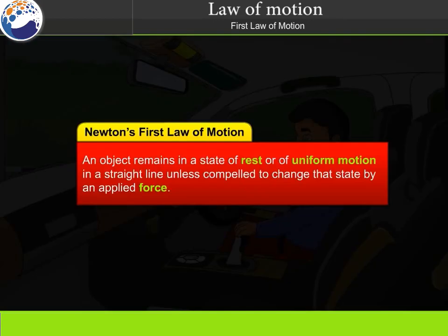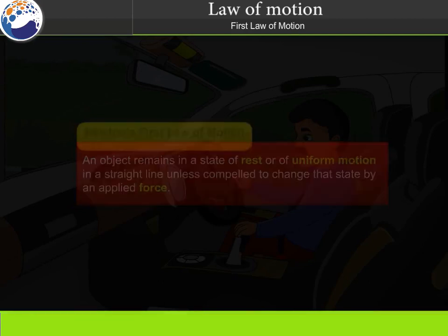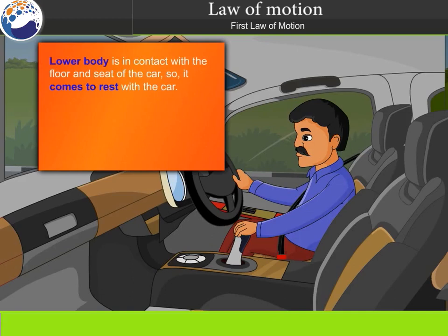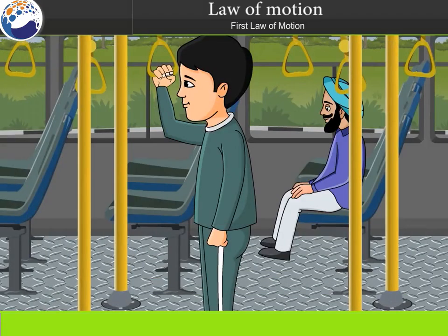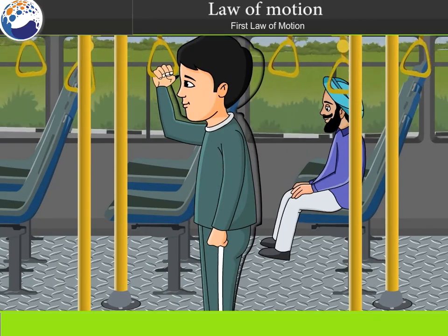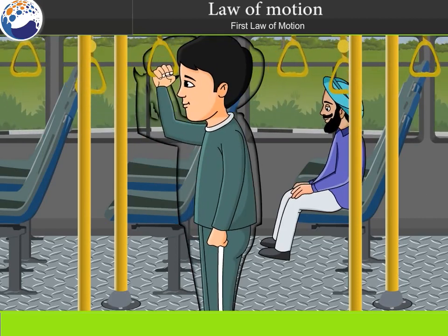Newton's first law of motion: an object remains in a state of rest or of uniform motion in a straight line unless compelled to change that state by an applied force. For example, we tend to remain at rest in a seat until the driver applies a braking force; the car slows down but our upper body continues forward due to inertia. Similarly, when standing in a bus that begins to move suddenly, we tend to fall backwards because the rest of our body opposes the motion due to inertia.